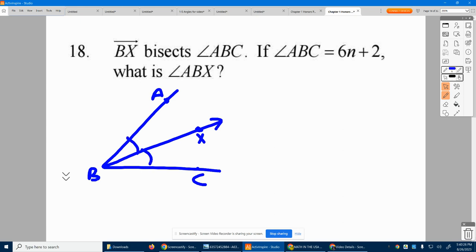So this angle and this angle are going to be the exact same opening—22 degrees, 44 degrees, whatever, 30 degrees. Now it says angle ABC is 6n plus 2, so this whole thing is 6n plus 2.